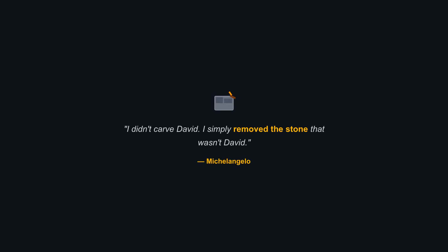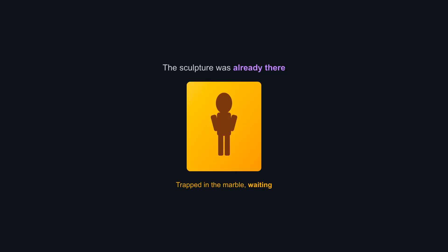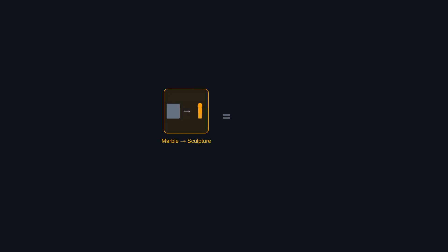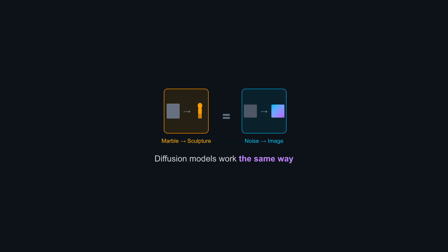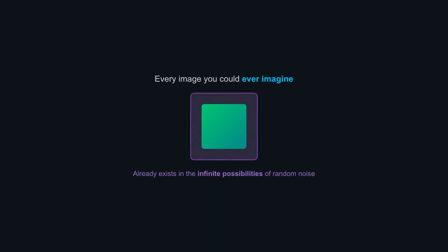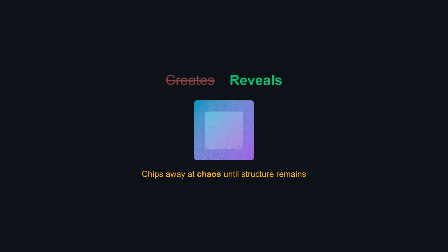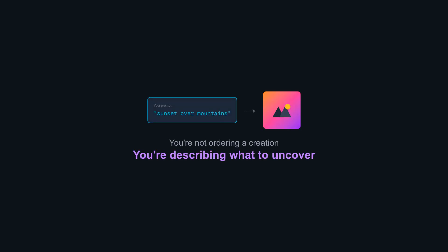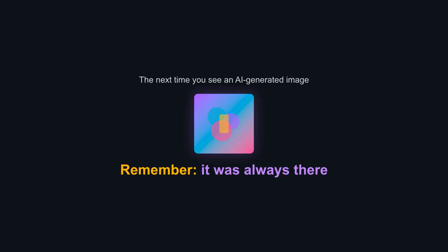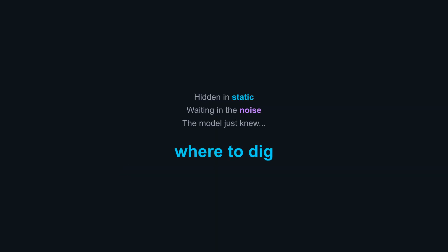Michelangelo once said he didn't carve David — he simply removed the stone that wasn't David. The sculpture was already there, trapped in the marble, waiting. Diffusion models work the same way. Every image you could ever imagine already exists, encoded somewhere in the infinite possibilities of random noise. The model doesn't create, it reveals. It chips away at chaos until structure remains. When you type a prompt, you're not ordering a creation — you're describing what to uncover. The next time you see an AI-generated image, remember: it was always there, hidden in static, waiting in the noise. The model just knew where to dig.